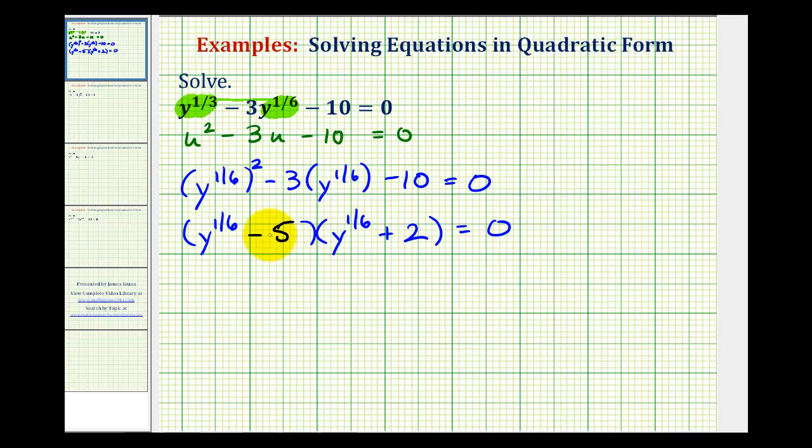And now this is equal to zero when these factors are equal to zero. So we want to know when y to the one-sixth minus five is equal to zero or when y to the one-sixth plus two is equal to zero.